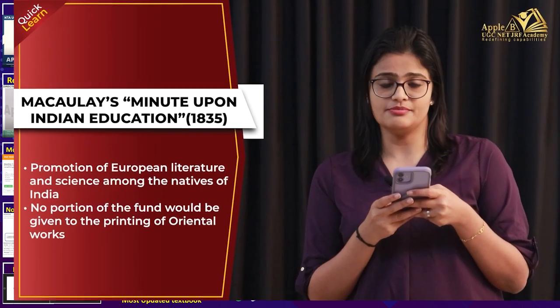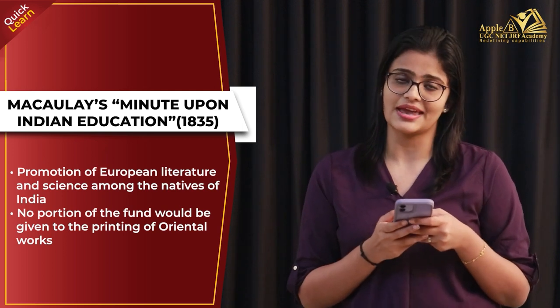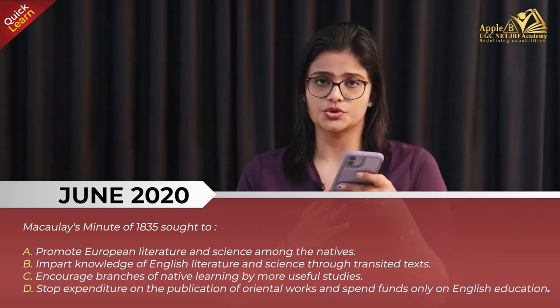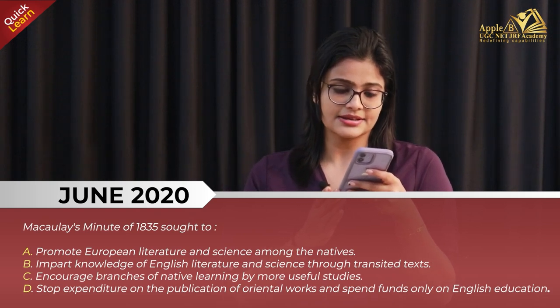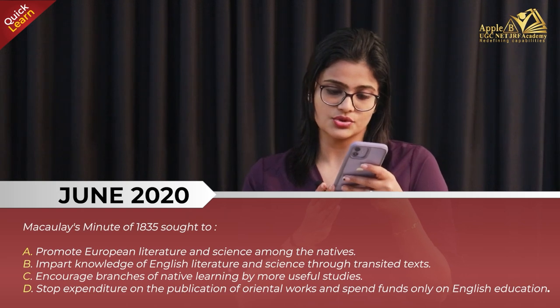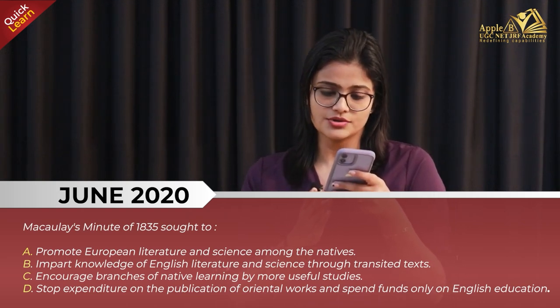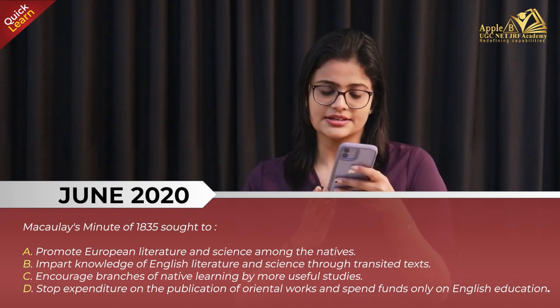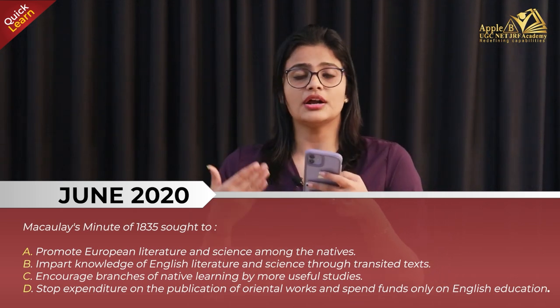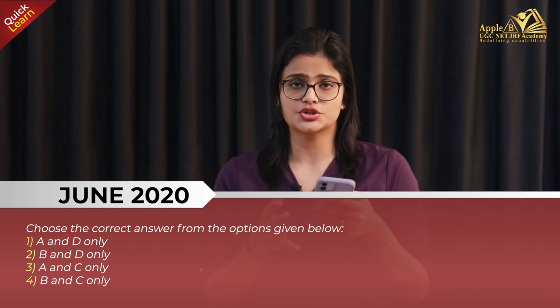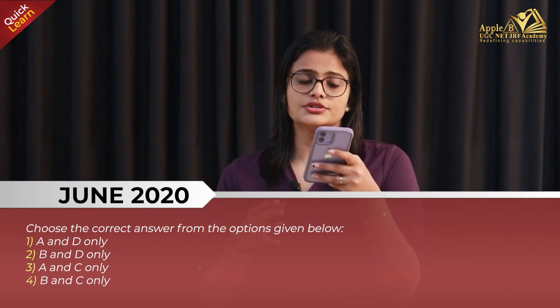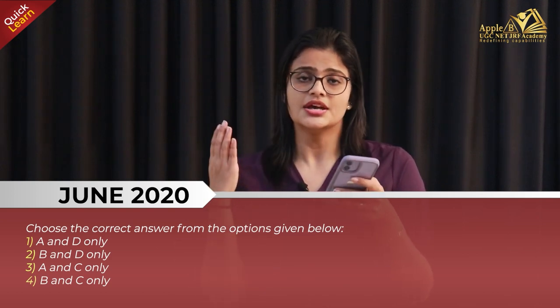All funds would be allotted to the development and teaching of English in India. These are the major points to remember regarding Macaulay's Minute of 1835, also known as the English Education Act of 1835. This was also asked as an exam question in June 2020. The question on Macaulay's Minute of 1835 had four options, and the correct answer is option A and D only — that is, to promote European literature and science among the natives, and to stop expenditure on the publication of Oriental works and spend funds only on English education.